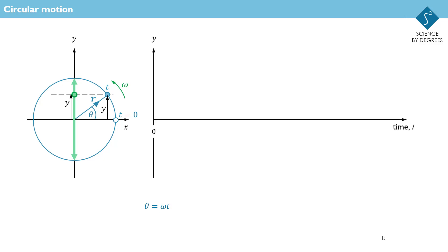Let's draw a graph of the y position of the blue dot over time. Here is the initial displacement, zero, and this shows the vertical position at time t.